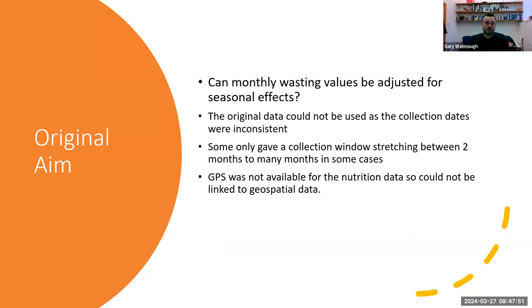The original aim was to look at how monthly wasting values could be adjusted for seasonal effects. Essentially, we have nutrition data that the Joint Malnutrition Estimation Team at UNICEF has access to, but it is often collected across a window during the year.